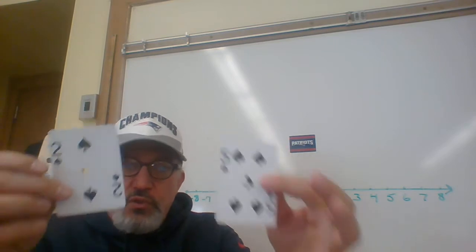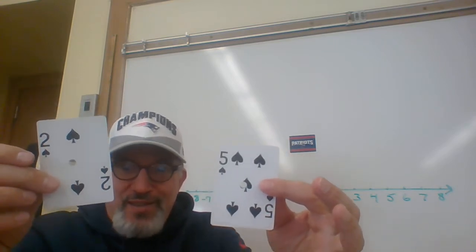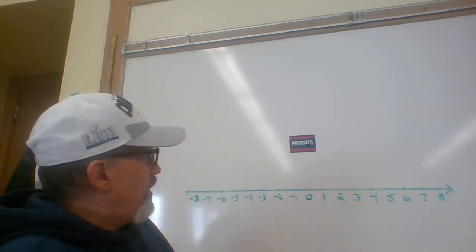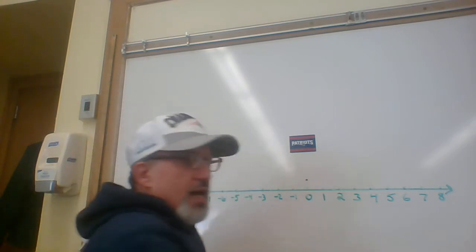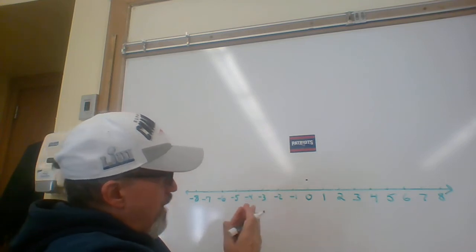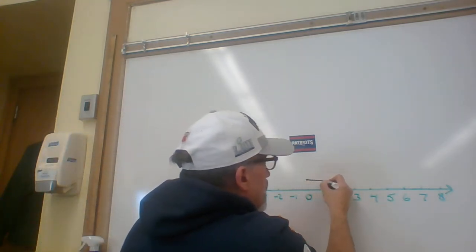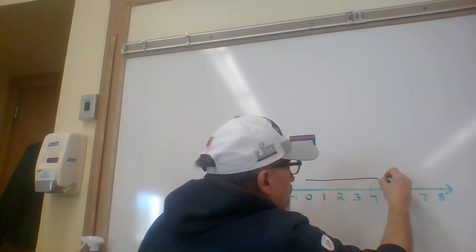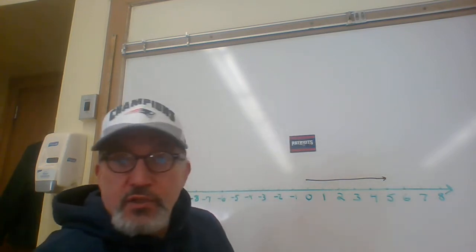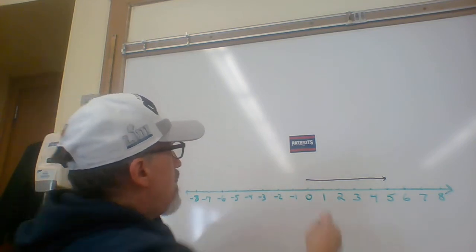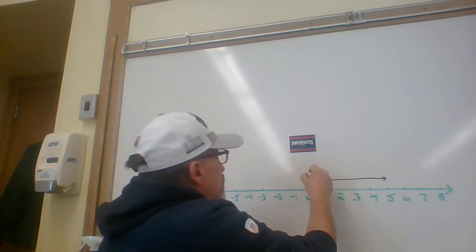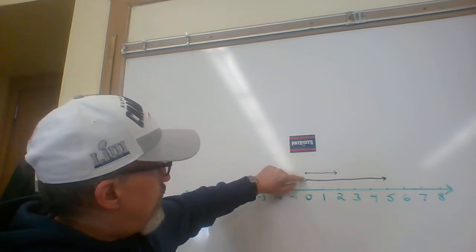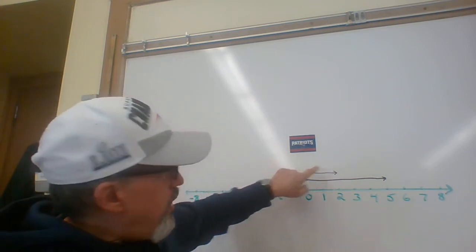We'll start with this one: 5 plus 2. Addition is commutative so it doesn't matter what order we do it in and of course we know that this is 7, but here's how I want you to look at it. I want you to see the positive 5 as an arrow that begins at 0 and points toward the 5 and ends there. So this directed arrow, later on you'll learn that that's called a vector and vectors are part of both math and science. The positive number 2 will be like that. It'll have its beginning point at 0 and its end point at 2.